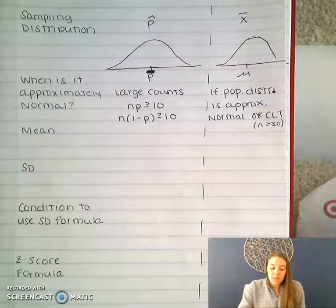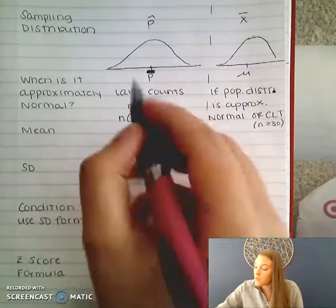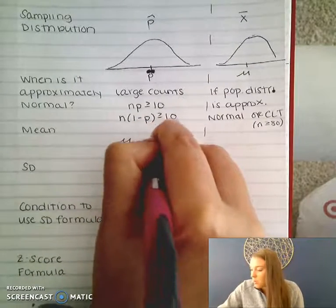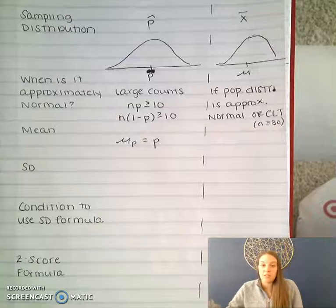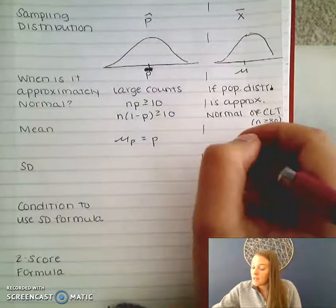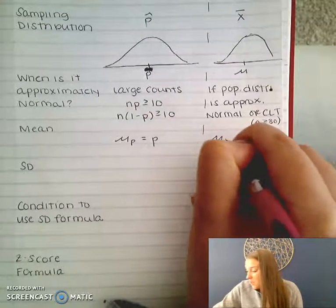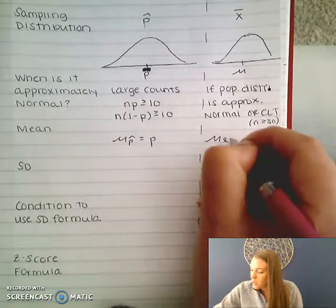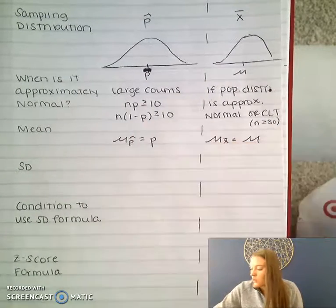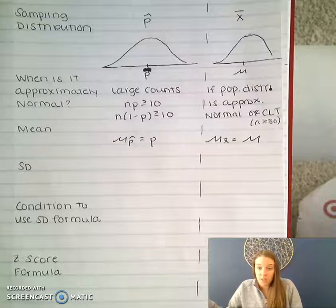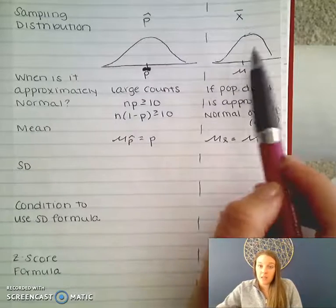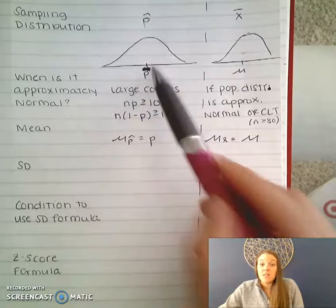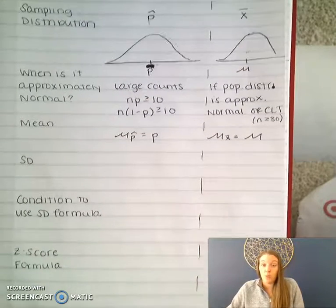For the mean calculations: the mean for proportions is equal to the population proportion — that's going to be your center. And the mean for means, the mean of your x-bar sampling distribution, is equal to the mean of your population. So this is just saying that the center equals the true mean or the true proportion.